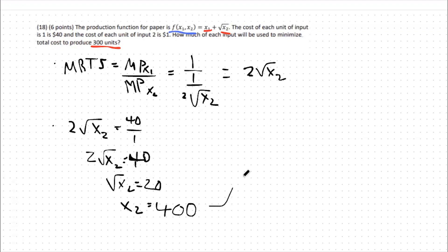From there we can plug back into our production function, seeing that we need to produce 300 units. So we'll say 300 is equal to x1 plus the square root of 400. Square root of 400 is 20, so x1 should equal 280. This means optimally, to minimize our costs of producing exactly 300 units, we will use 400 units of input 2 and 280 units of input 1.